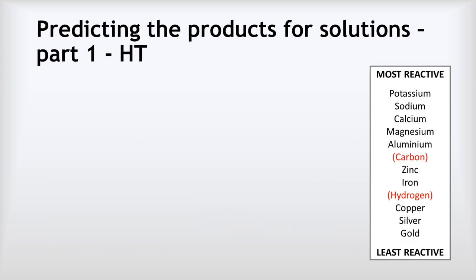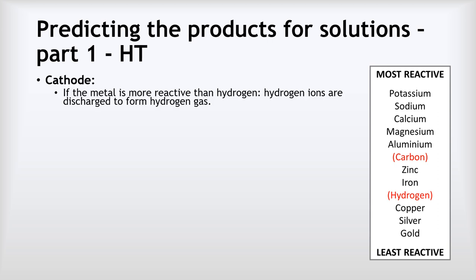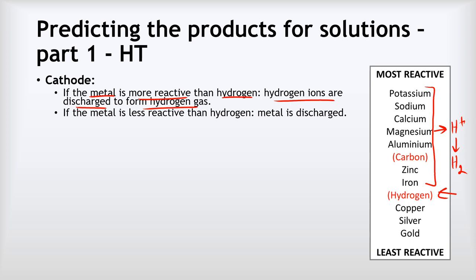So how do we predict the products of electrolysis of solutions? At the cathode, if the metal is more reactive than hydrogen, then hydrogen ions will be discharged to form hydrogen gas. All of these metals — the ones higher in the reactivity series than hydrogen — rather than the metal being discharged, hydrogen will be discharged to form hydrogen gas because all of those metals are more reactive than hydrogen. If the metal is less reactive than hydrogen, then the metal will be discharged, and for those ones below hydrogen in the reactivity series, we will get the metal being produced instead.